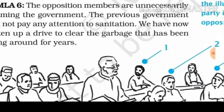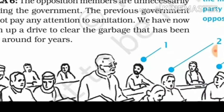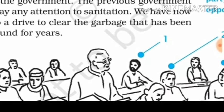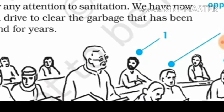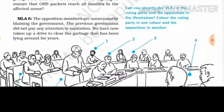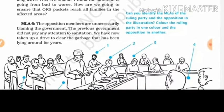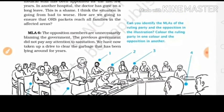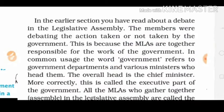There is a picture with markings — from these dialogues, you have to decide which MLAs are from the opposition and which are from the ruling party. Moving ahead, the reason they are discussing like this is that MLAs are together collectively responsible for the work of the government.